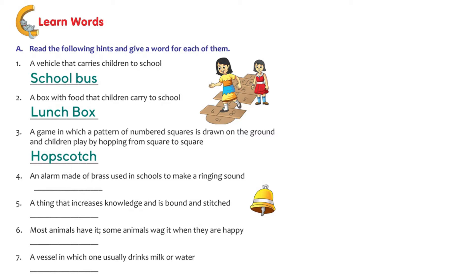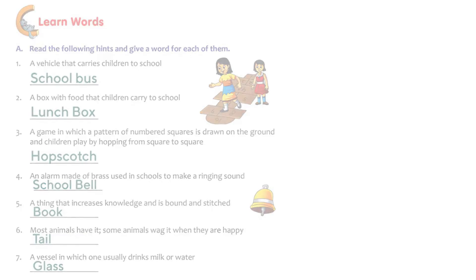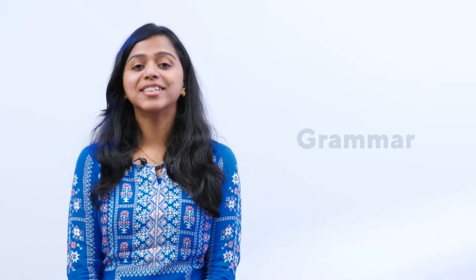An alarm made of brass used in schools to make a ringing sound - school bell. Most of us wait for the school bell to ring to go home. A thing that increases knowledge and is bound and stitched - it's a book. Most animals have it, some animals wag it when they are happy - it's a tail. A vessel in which one usually drinks milk or water - it's a glass.